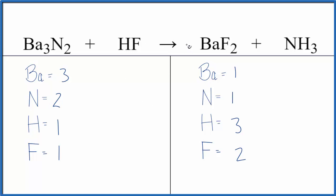We could balance the bariums first. We could put a 3 here. Three goes to everything. One times three gives us three bariums. And then two times three for the fluorine gives us six of those.